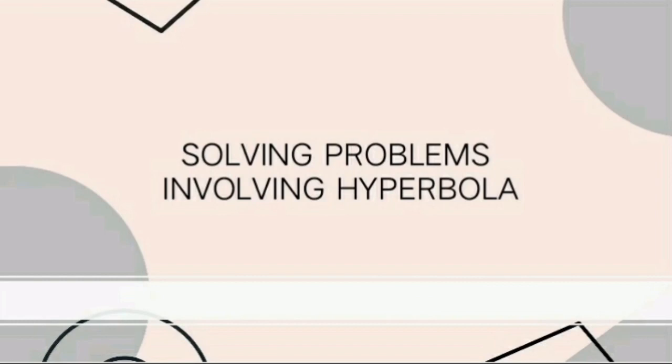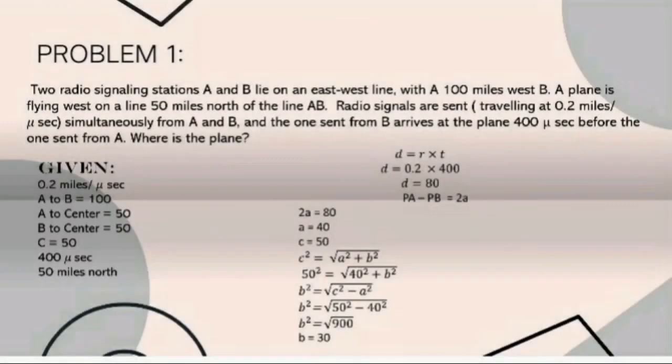Good day to all. In this video, we will focus on solving problems involving hyperbola. Problem number 1: Two radio signaling stations, A and B, lie on an east-west line with A 100 miles west of B. A plane is flying west on a line 50 miles north of the line AB. Radio signals are sent traveling at 0.2 miles per microsecond simultaneously from A and B, and the one sent from B arrives at the plane 400 microseconds before the one sent from A. Where is the plane?